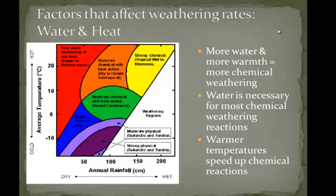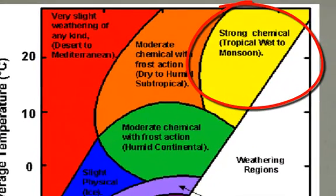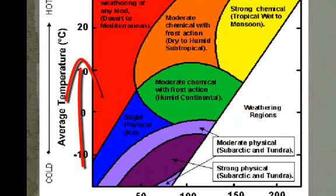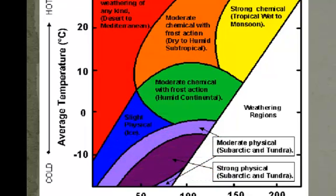The factors that affect chemical weathering rates are mostly water and heat. More water and more warmth equals more chemical weathering. Water is necessary for most of these chemical reactions, so an area that gets a lot of rainfall is going to have more chemical weathering happening. Warmer temperatures speed up chemical reactions, so a warm moist area will have much more chemical weathering than a cold moist area.